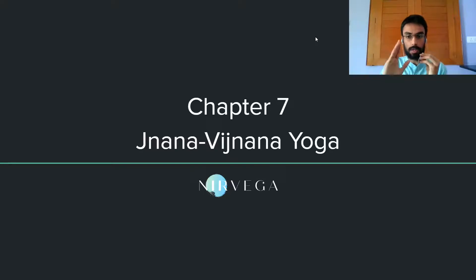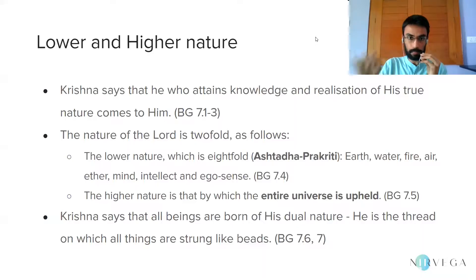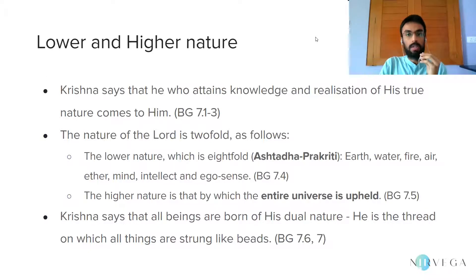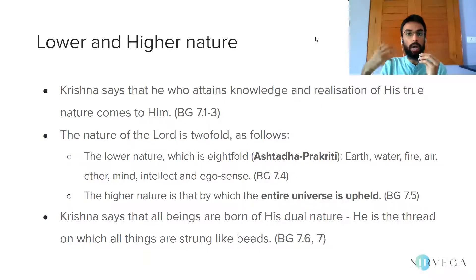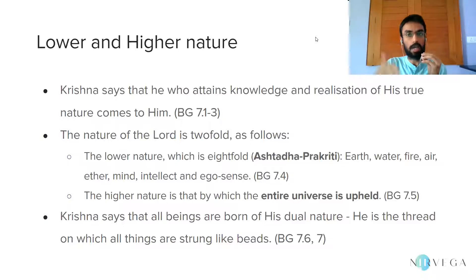First, we look at chapter 7, which is called Jnana Vijnana Yoga. The word Jnana refers to knowledge, while Vijnana refers to a realization of that knowledge. So we could understand Jnana as a theoretical or intellectual grasp of a certain concept, and Vijnana as the realization of that concept. Therefore, this chapter is called Jnana Vijnana Yoga.